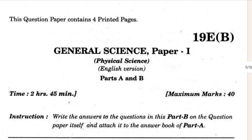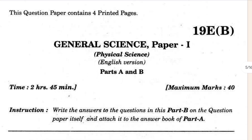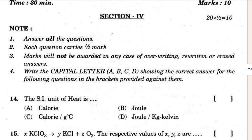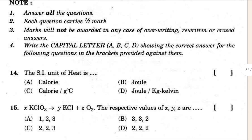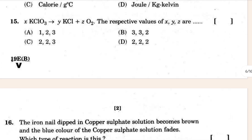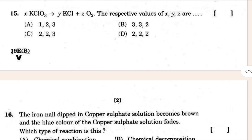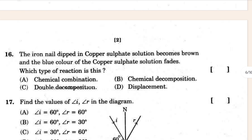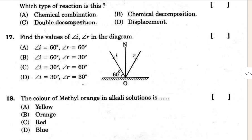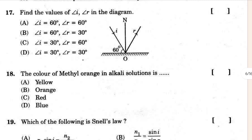So you can see this is a 2018 paper. There are 10 MCQ questions given. One example is: 'The SI unit of heat is — calories or joules?' Then you can also see questions 16, 17, 18, and 19 from here.